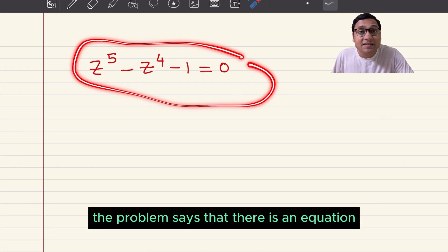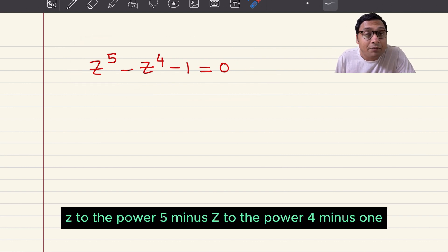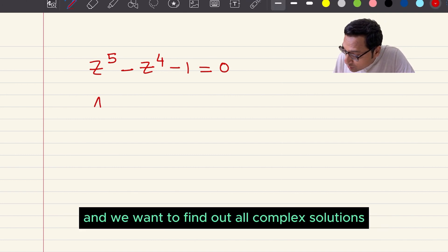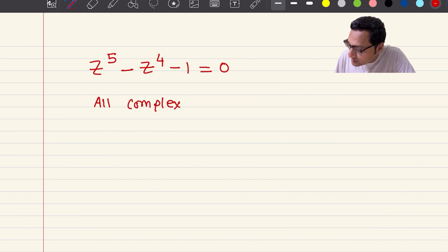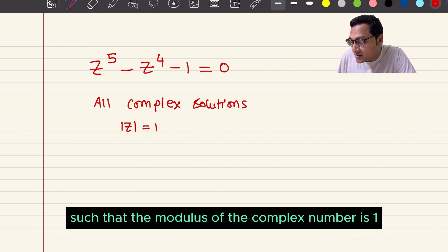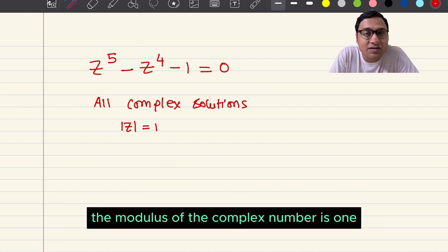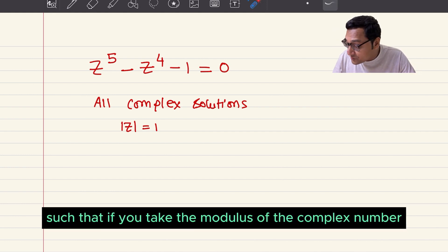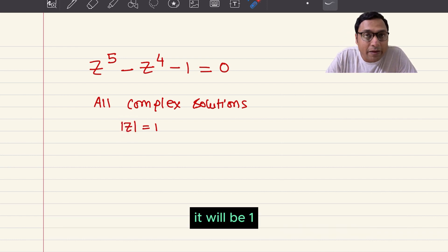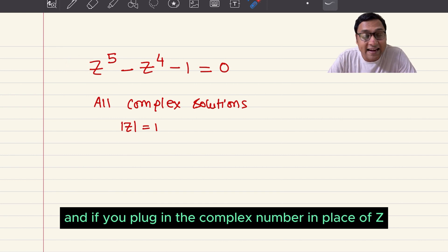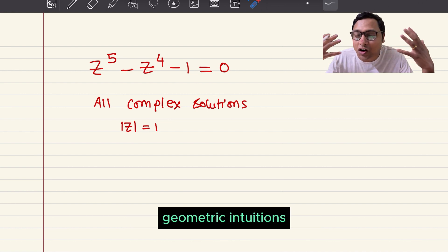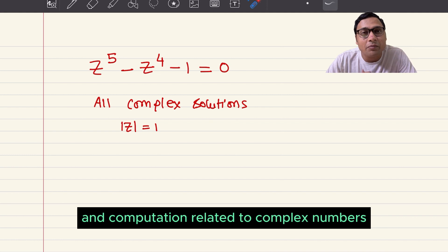The problem says there is an equation z to the power 5 minus z to the power 4 minus 1, and we want to find out all complex solutions such that the modulus of the complex number is 1. How many such complex numbers are there such that if you take the modulus, it equals 1, and if you plug the complex number in place of z, it satisfies the equation? We will use complex numbers, geometric intuitions, and computation related to complex numbers in this problem.